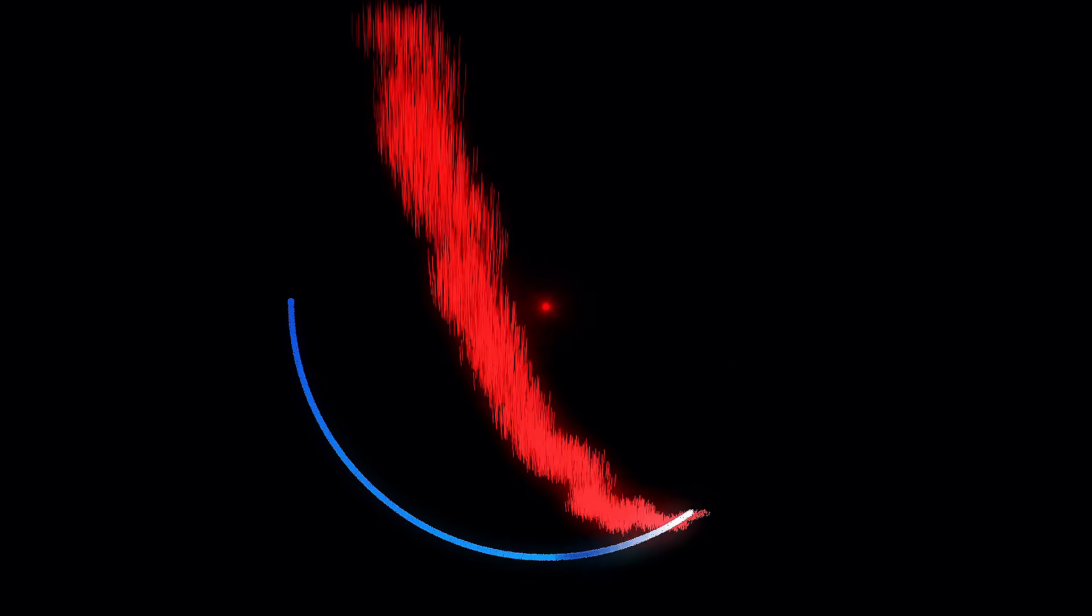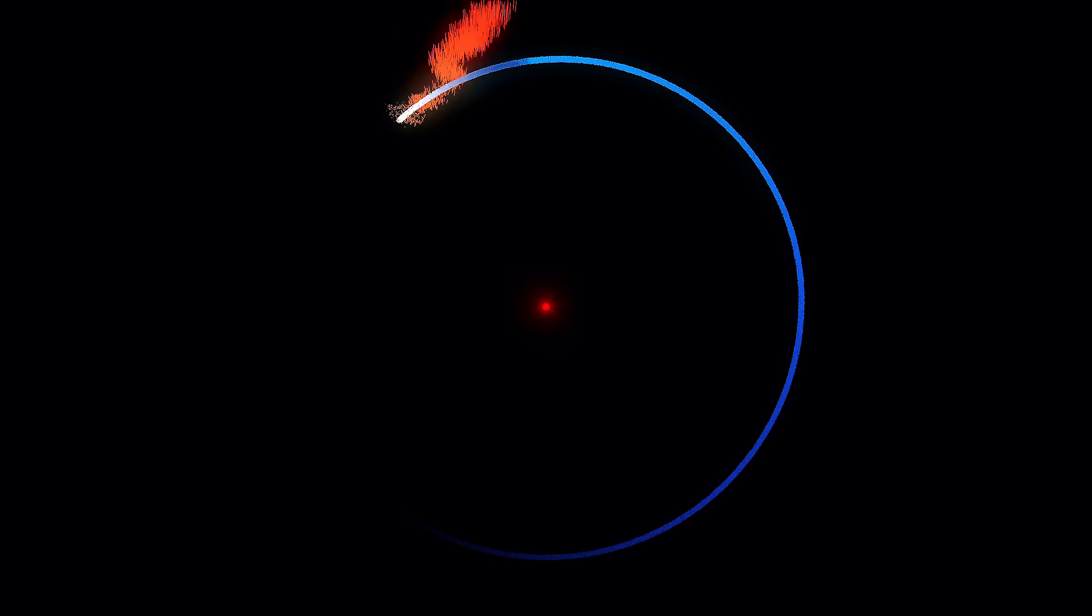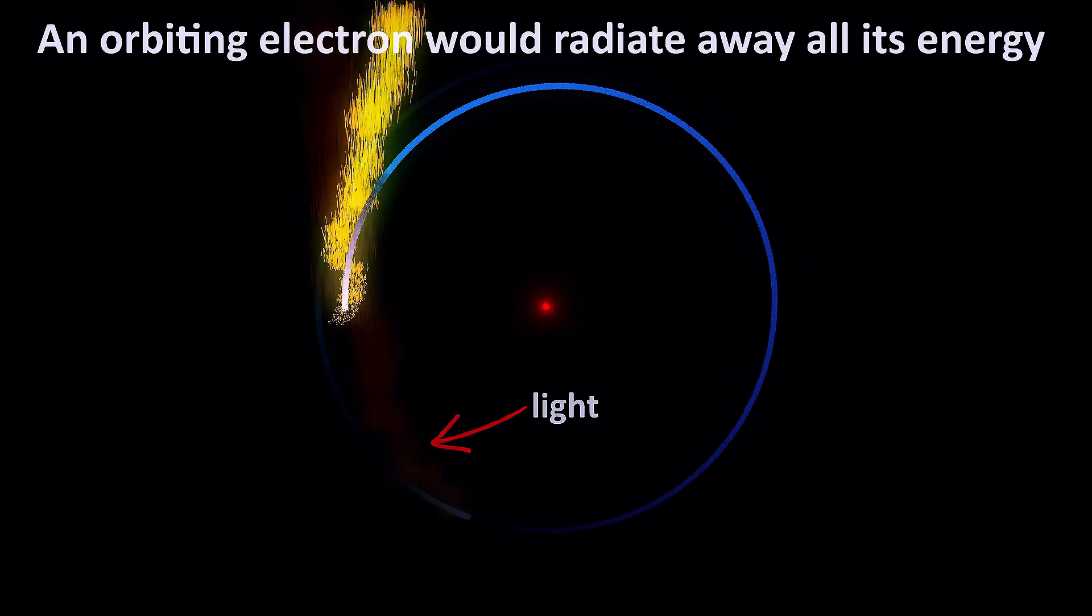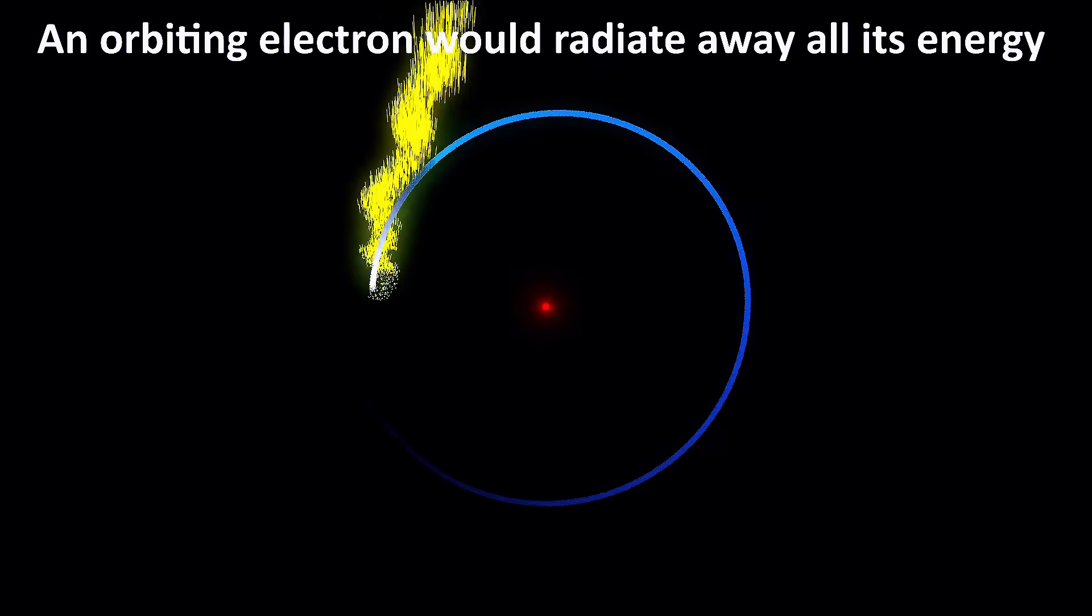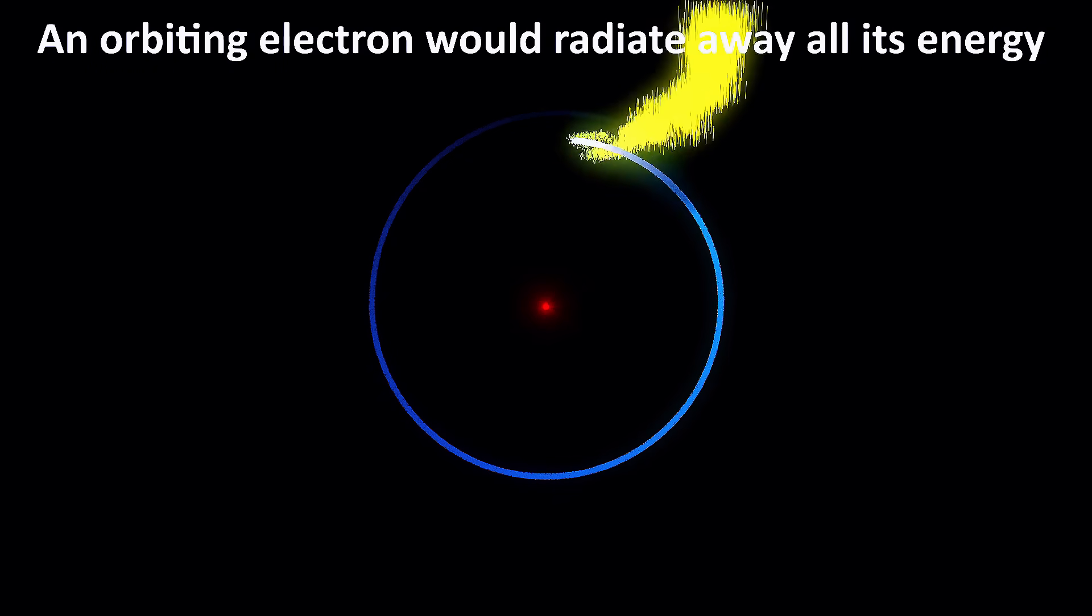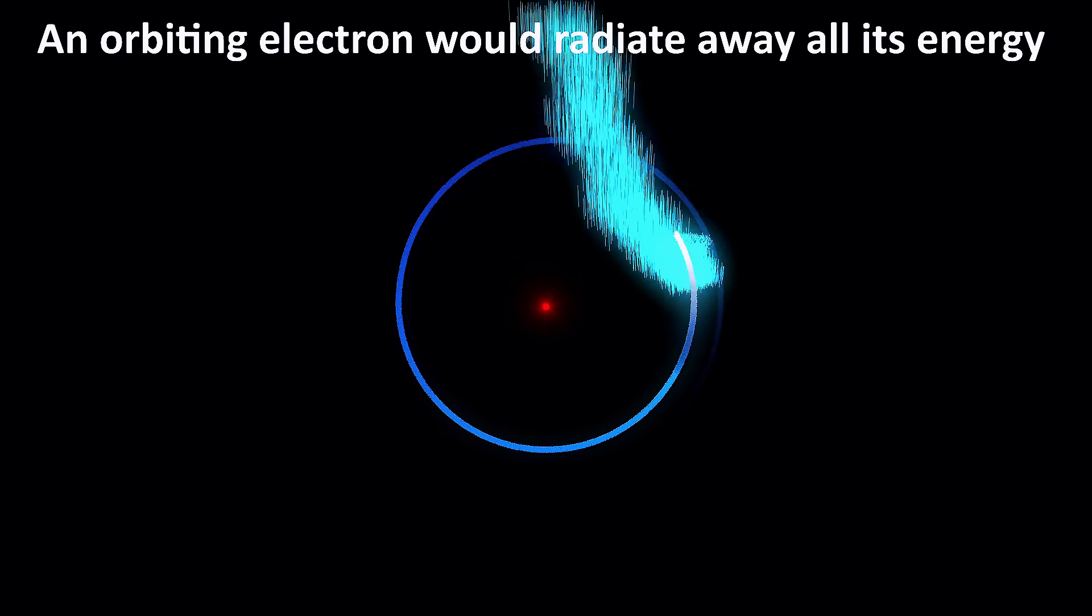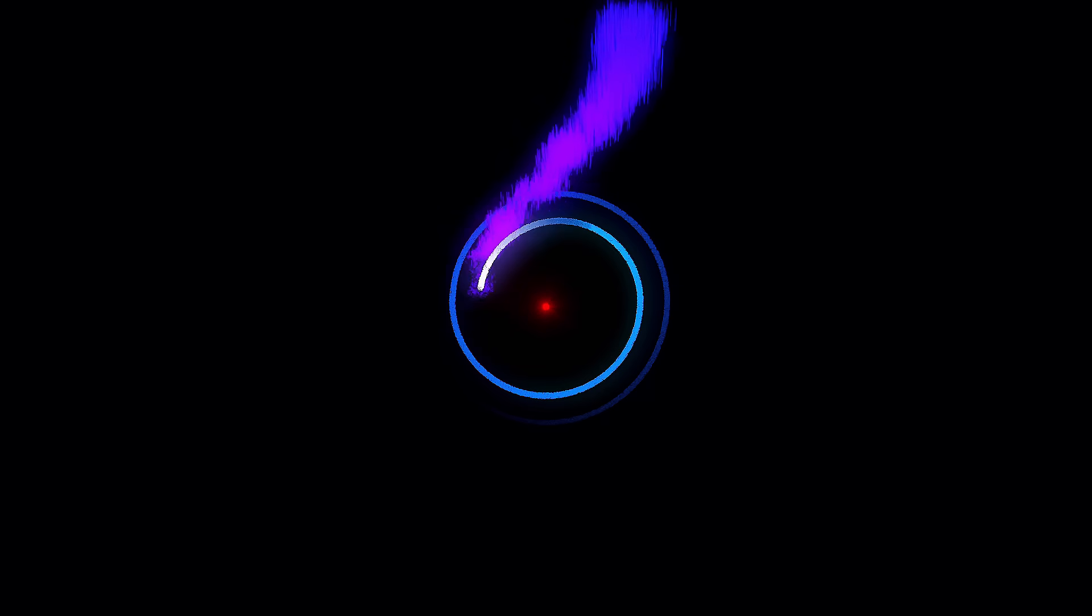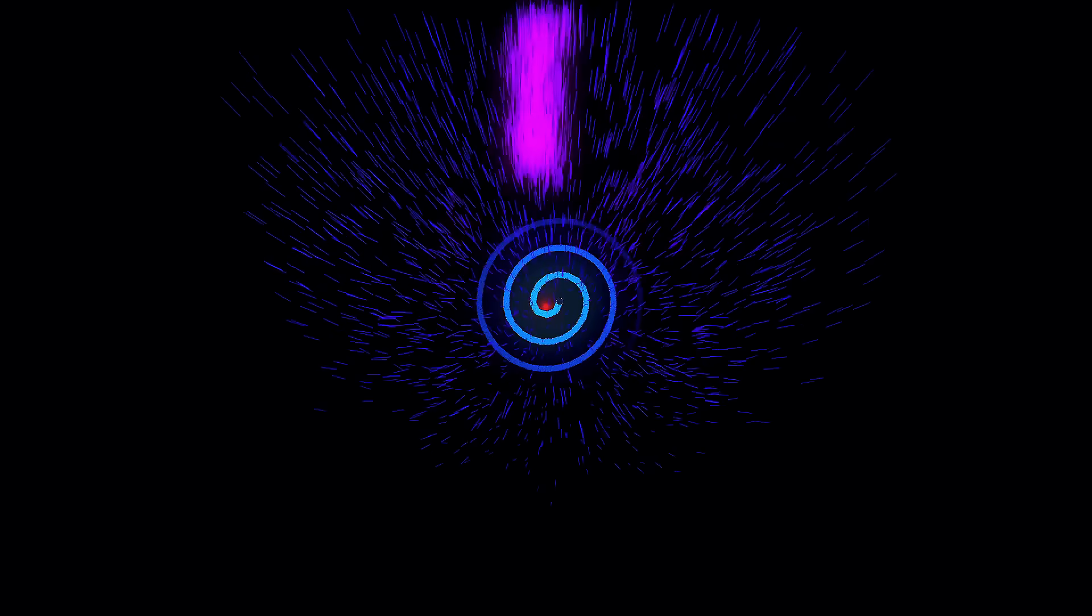But here's where it gets even more interesting. If electrons were orbiting around a nucleus, they must be undergoing a constant acceleration due to the circular orbit. But charges undergoing acceleration emit electromagnetic waves, also known as light. So if electrons were simply point-like particles orbiting a nucleus like planets around the sun, they would quickly radiate away all their energy and spiral inwards, eventually crashing into the nucleus. In other words, it would be impossible for atoms to be stable.